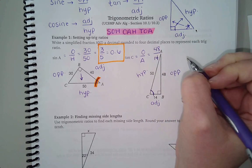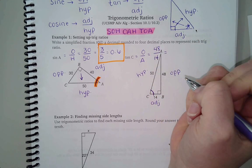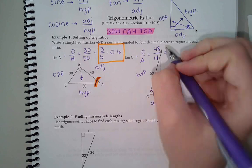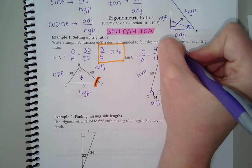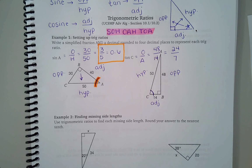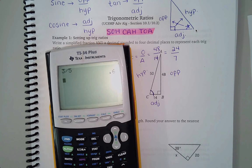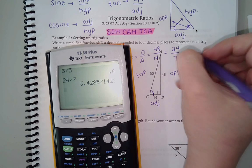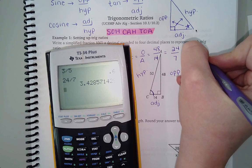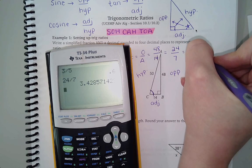And then I want to reduce that as a fraction. So I think I can divide by 2 and I get 24 over 7 as my simplified fraction. And then I just want to know what is 24 over 7 as a decimal. So I get 3.4286.